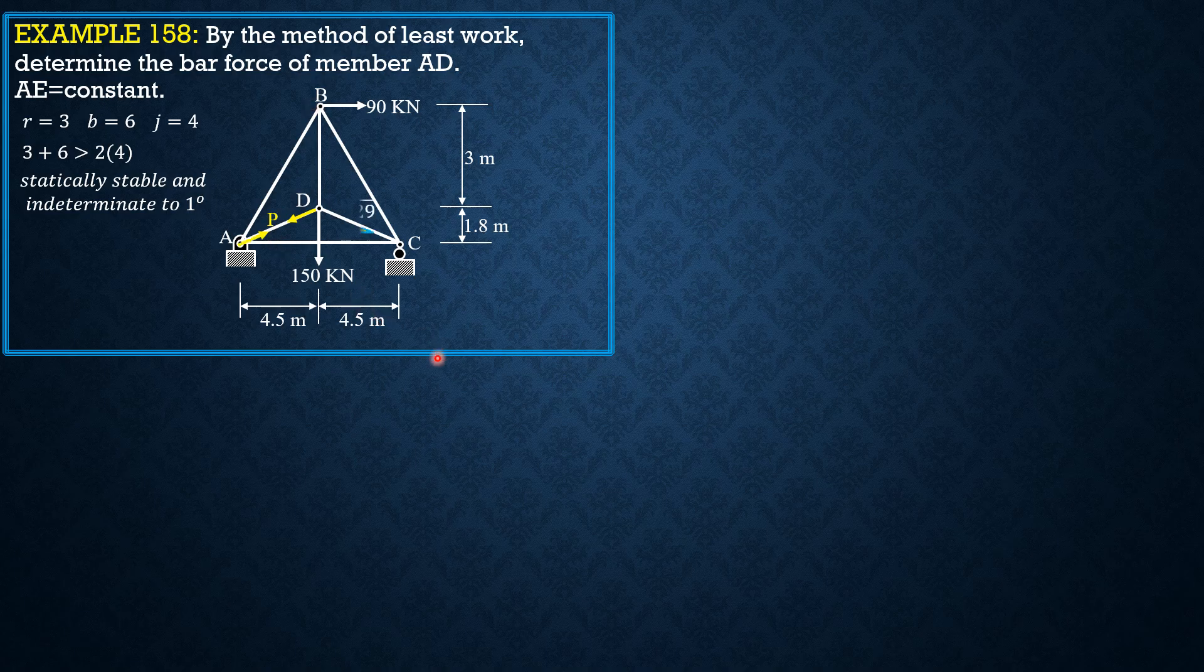Let us select AD as our redundant force and we will denote that by P. There are six members. Take note. So the slope of CD, which is the slope of AD, is 4.5 divided by - common to 4.5 and 1.8 is 0.9 - so 4.5 over 0.9 is 5, 1.8 divided by 0.9 is 2. So same slope as AD. And the slope of AB, which is slope of BC, 4.5 over 0.3 is 15. Common to 4.8 also 4.8 over 0.3 is 16, and hypotenuse square root of 481.